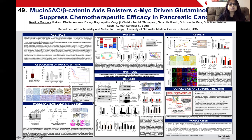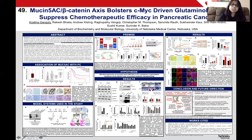Apart from that, we observed that upon nuclear localization of beta-catenin, there was significant enrichment of beta-catenin on the c-MYC promoter, which led to enhanced expression of glutamine transporters and enhanced uptake of glutamine from the culture supernatant. Glutamine deprivation in MUC5AC expressing cells made them sensitive to gemcitabine, as shown in this panel.